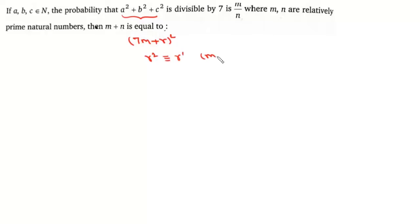Remainder r' modulo 7 where r takes values from 0 to 6. When r² is 0, it is 0 modulo 7. If it is 1, it is 1 modulo 7. 2² is 4 modulo 7. 3² is 9, which is 2 modulo 7.